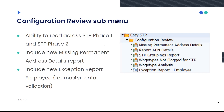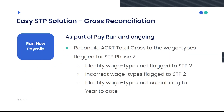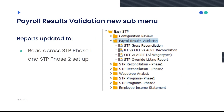This is what our Configuration Review menu looks like. You have the ability to run any of these reports across STP Phase 1 and Phase 2. We've introduced a couple of new reports — one around missing permanent address details, and one around exceptions for employee master data. Under our gross reconciliation area, we're talking about that transitioning period for clients implementing Phase 2. You have the ability to reconcile your ACRT total gross for wage types flagged for STP Phase 2 and those not flagged for STP Phase 2.